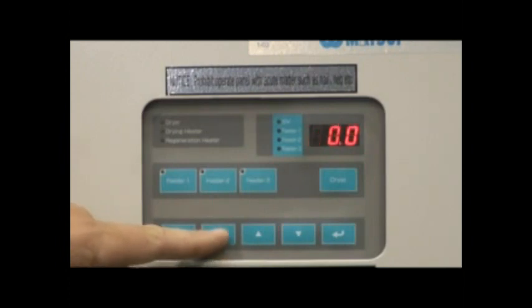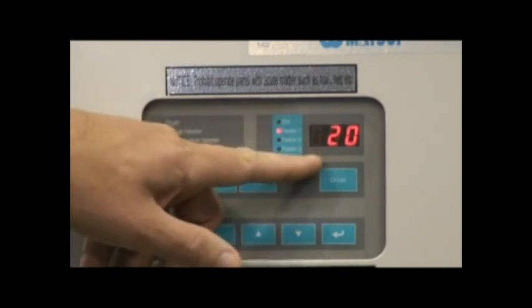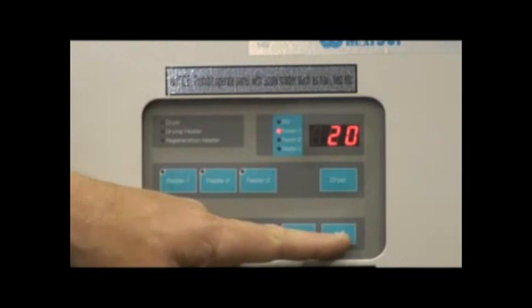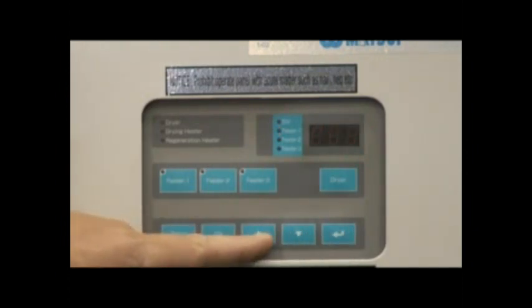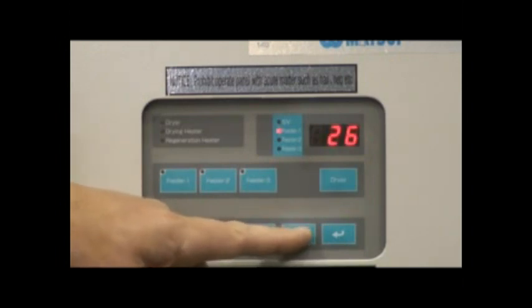The FD1 or feeder 1 setting is the feeder 1 blower on time in order to load resin into the main drying hopper. As a general rule of thumb, Matsui recommends that you set this time in order for the hopper receiver to fill approximately 80% on each loading cycle.